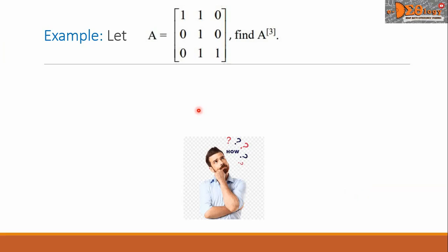Let us see this example. Let matrix A equal to [1, 1, 0 / 0, 1, 0 / 0, 1, 1]. Find A power 3.